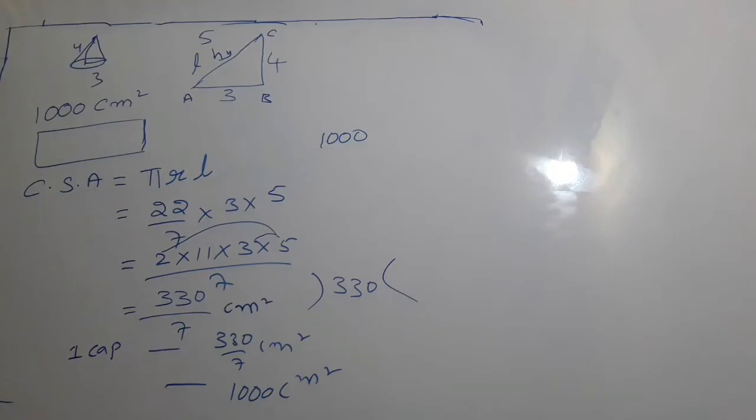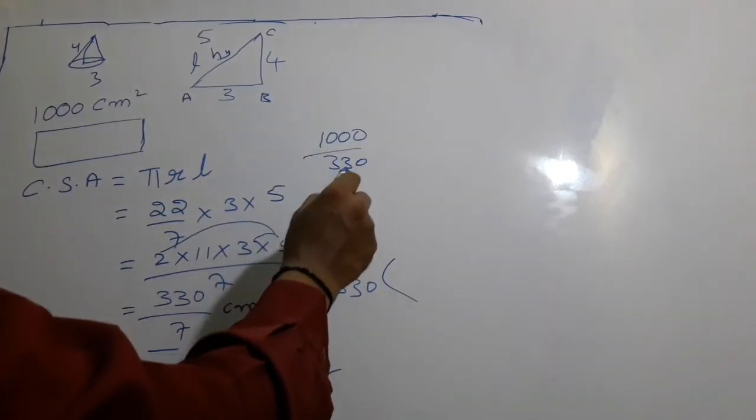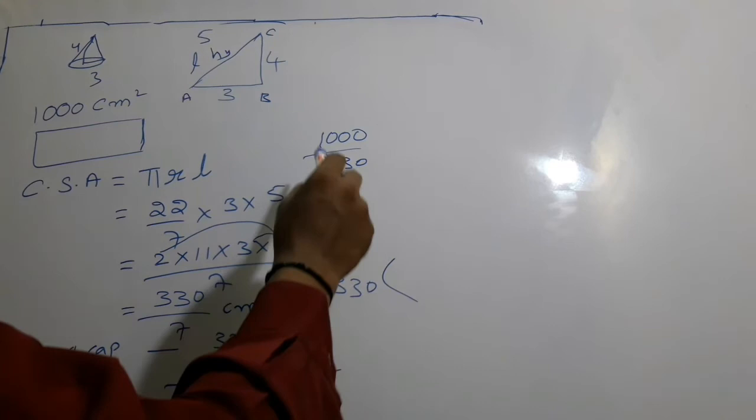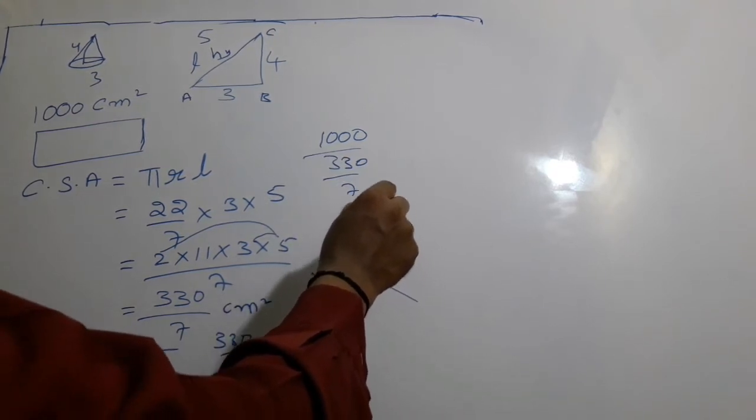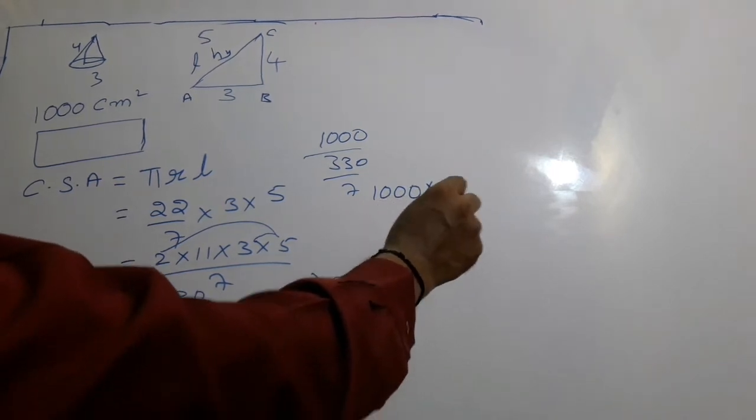1000 divided by 330/7. When dividing by a fraction, if the denominator is a fraction going to the numerator, it becomes reversed.